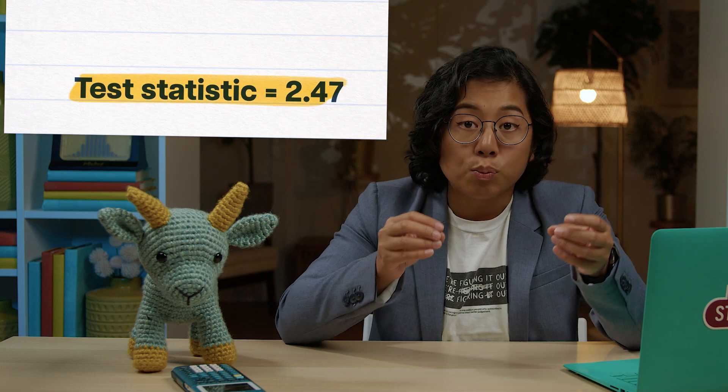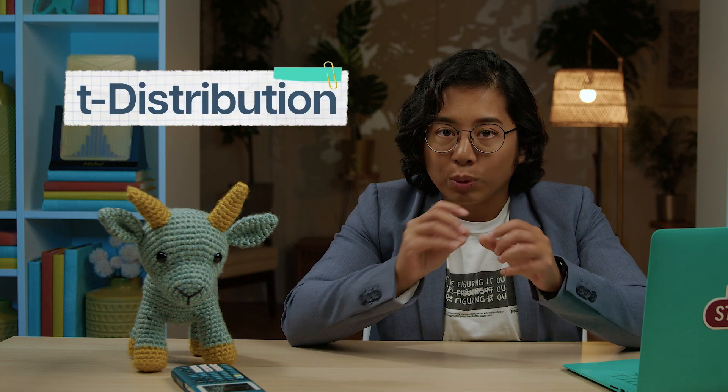Putting that all together gives us a test statistic of 2.47, which is a standardized way of measuring how far our sample is from our expected result. The goal of the test statistic is to standardize what we see and compare it to what we would expect if the null hypothesis were true. We want to know how unlikely it was to see that $4.80 difference in a world where there was truly no added benefit to including a picture on the ad. We'll need a probability distribution to translate that 2.47 into a probability. We've used the normal distribution for hypothesis testing before, but that required knowing the population standard deviation — here we have to estimate it, so we need a distribution that reflects that added uncertainty.